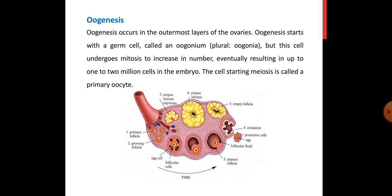Oogenesis is the process in which ova develops, and this takes place in the outermost layer of the ovaries. Oogenesis starts with a germ cell called an oogonium (singular) or oogonia (plural). This cell undergoes mitosis to increase the number — the cells first multiply so that many oogonia are produced. In mitotic division, the number of chromosomes is maintained from parent to daughter cell, so daughter cells are also diploid just as the mother cell is diploid.